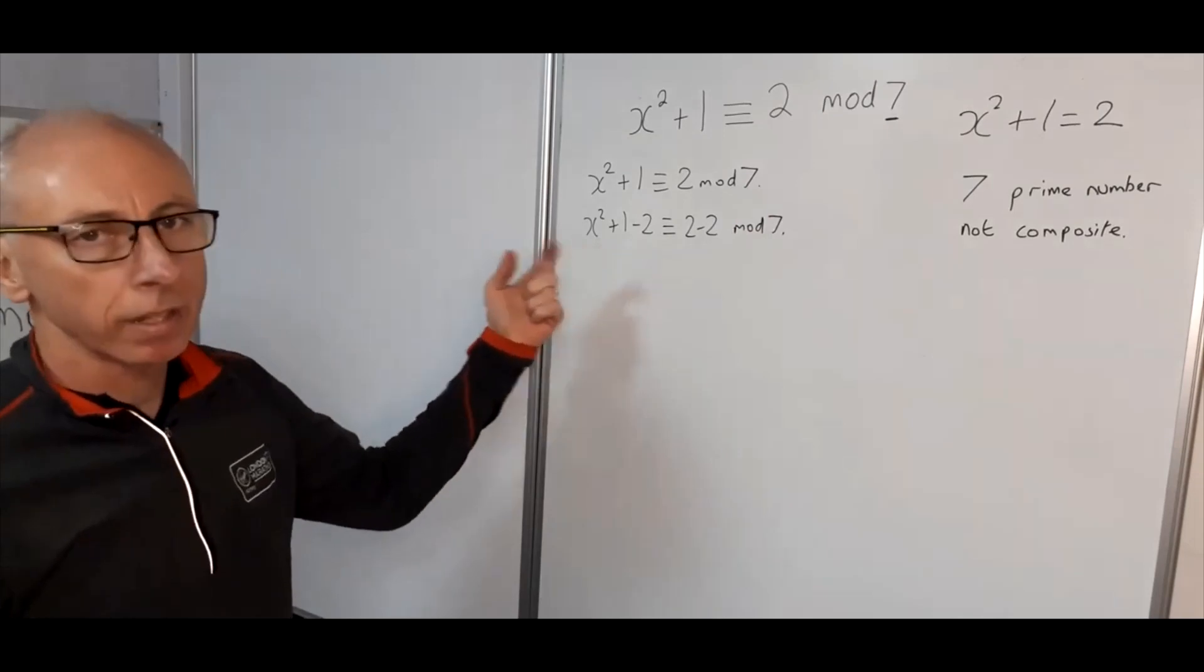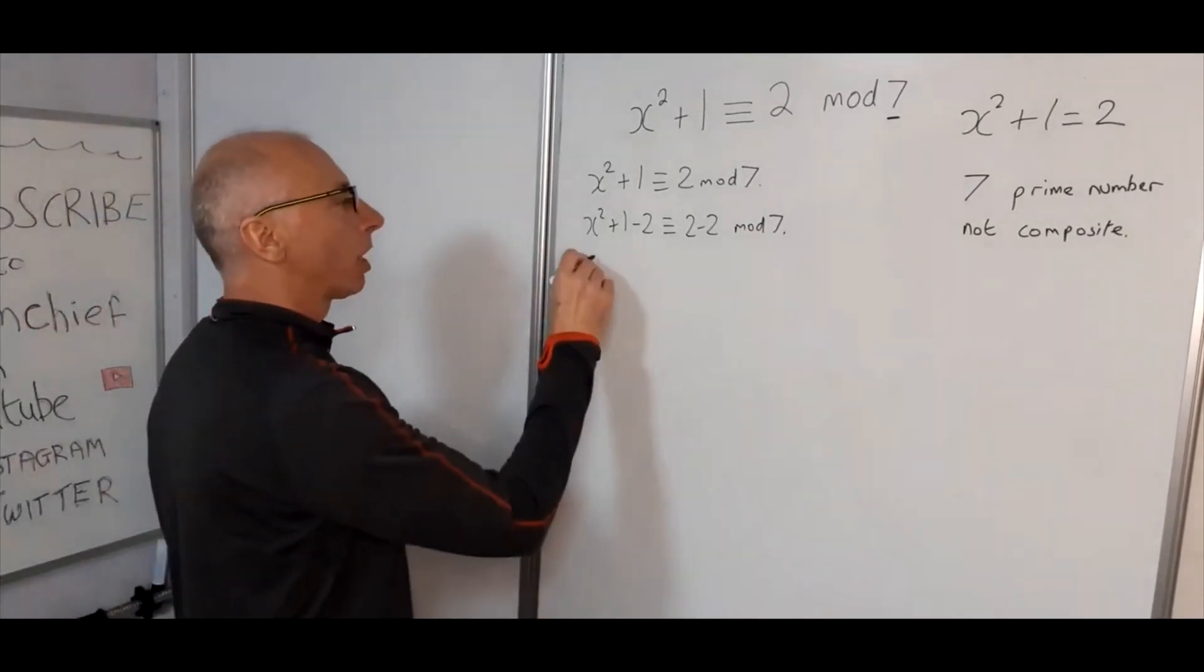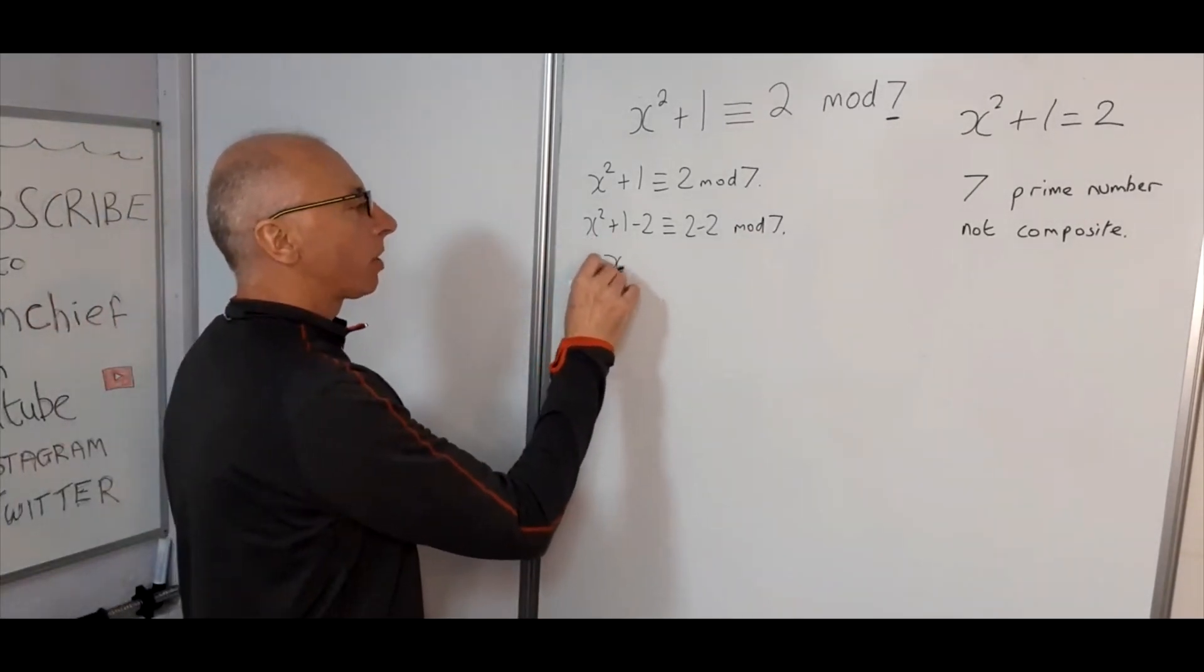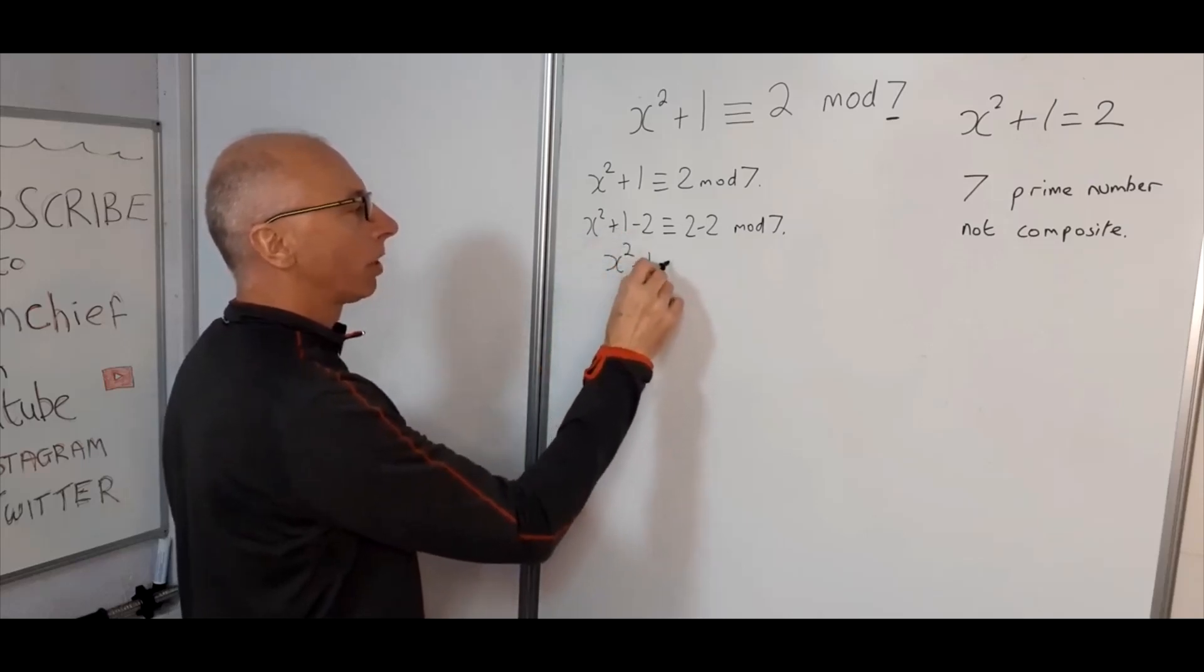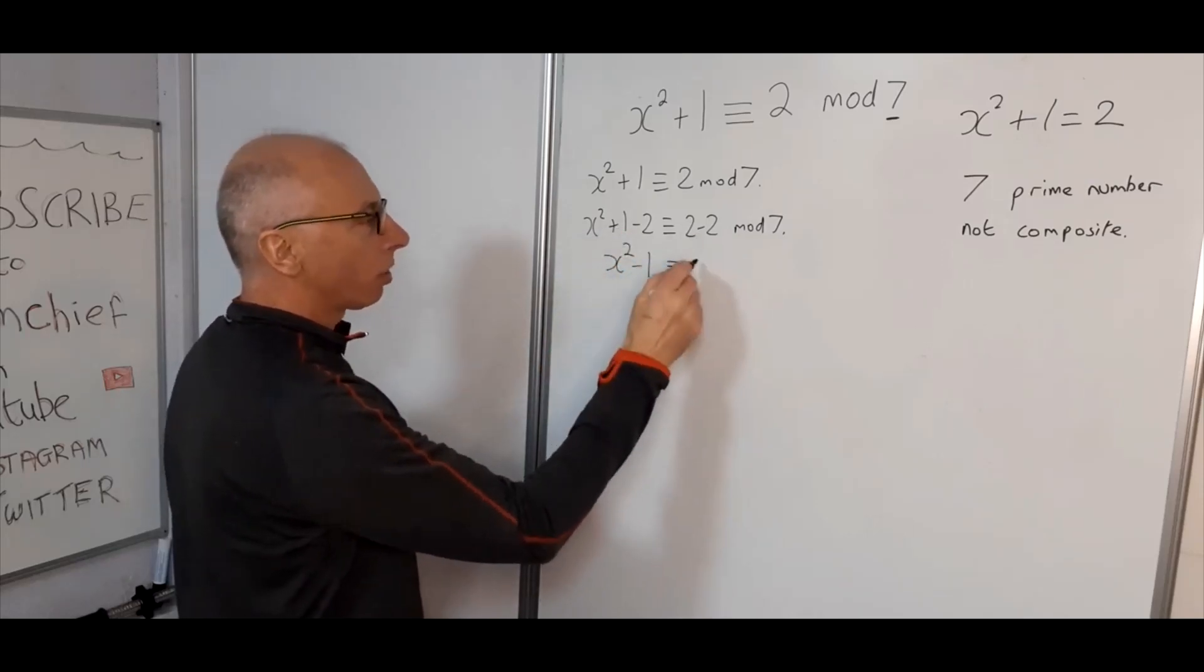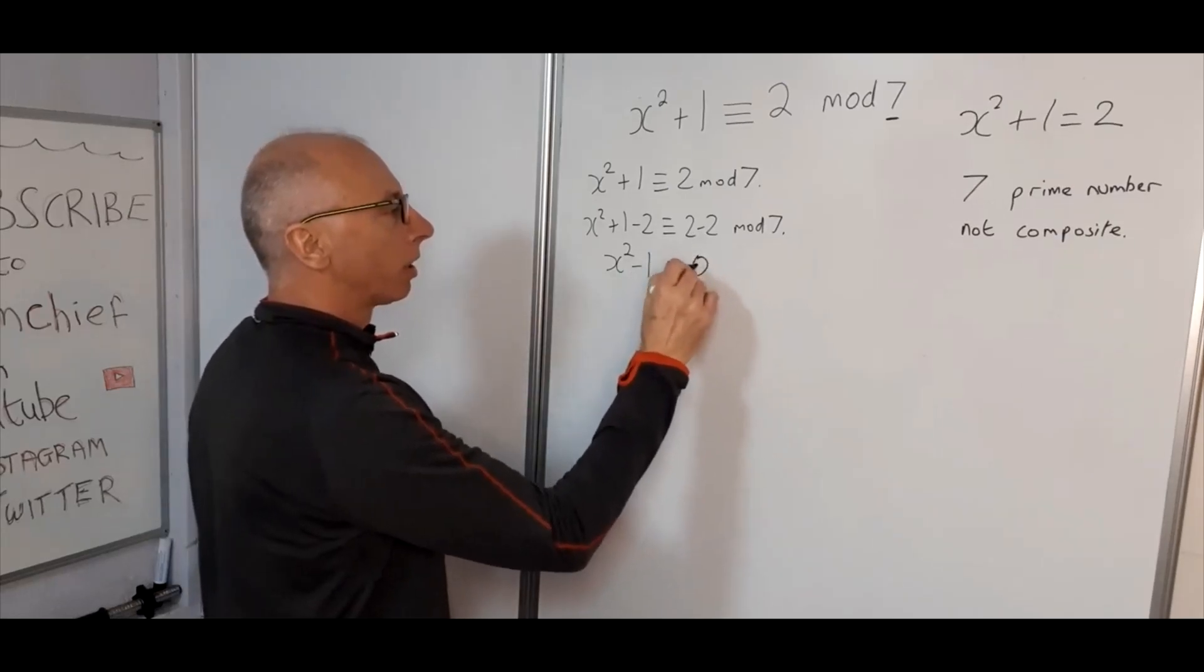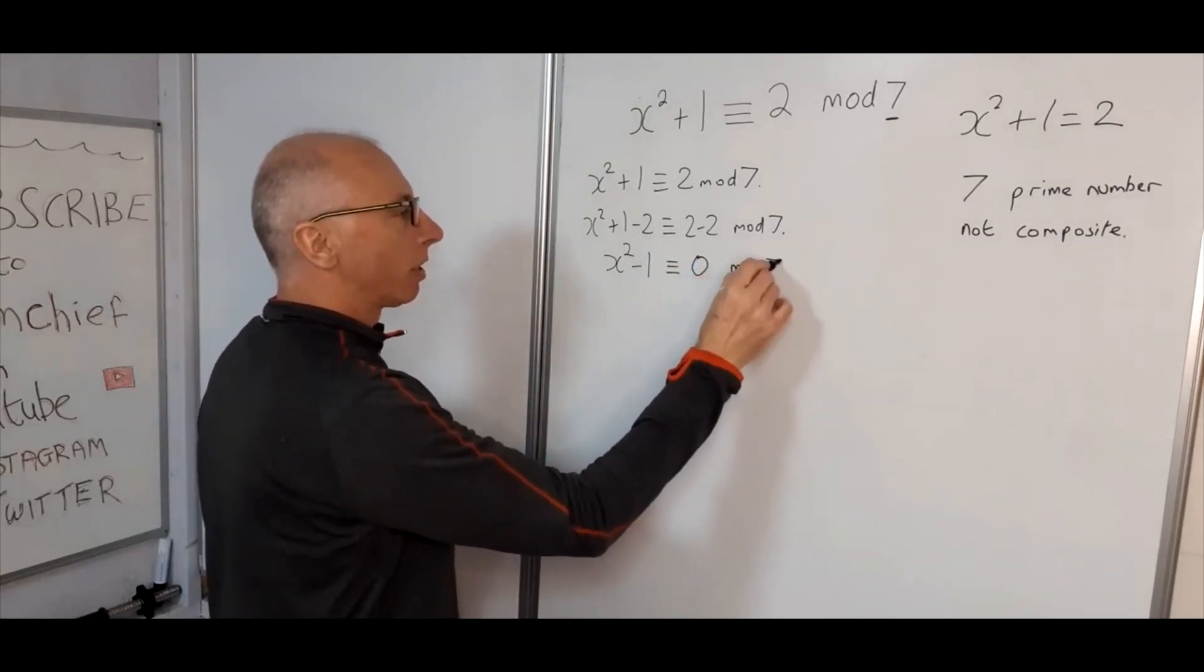So then x squared plus 1 minus 2 is congruent with 2 minus 2 mod 7, just to show you this step each way. So now let's simplify this up: x squared plus 1 minus 2, that's minus 1, and 2 minus 2 we know is 0, and that's mod 7.